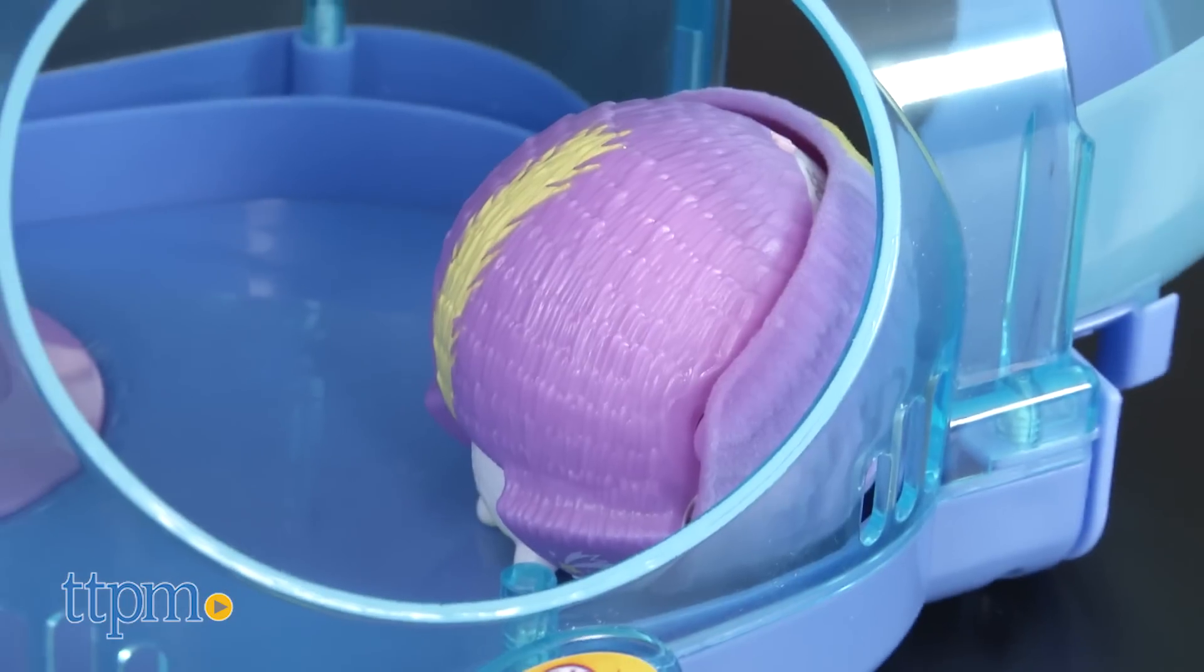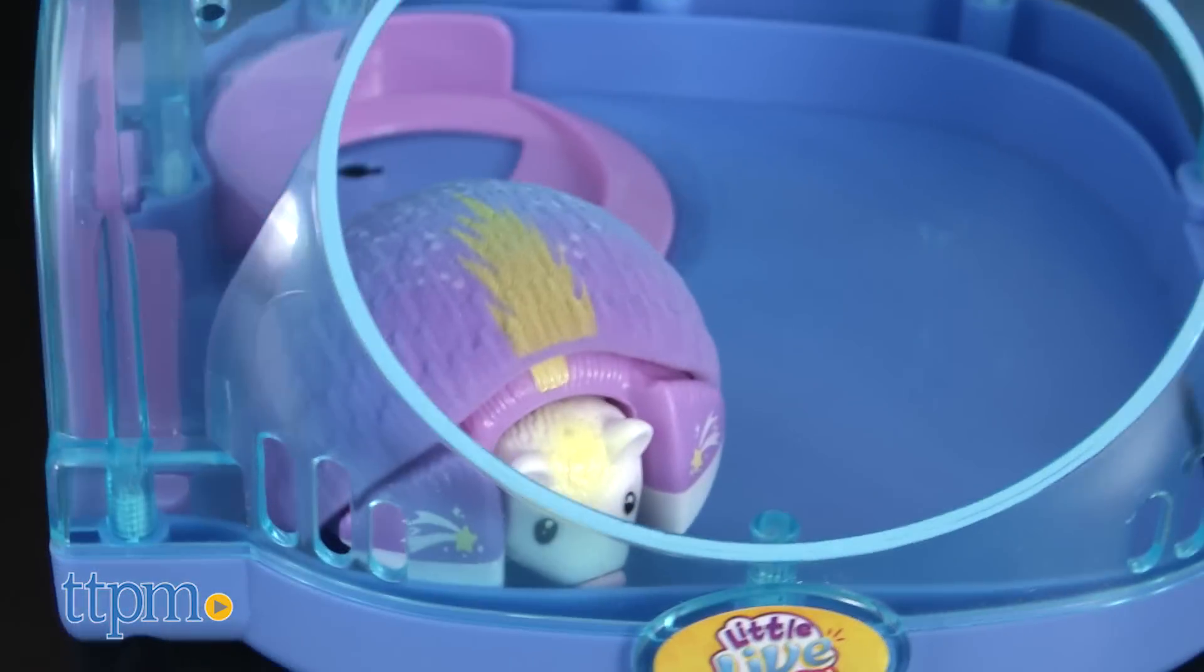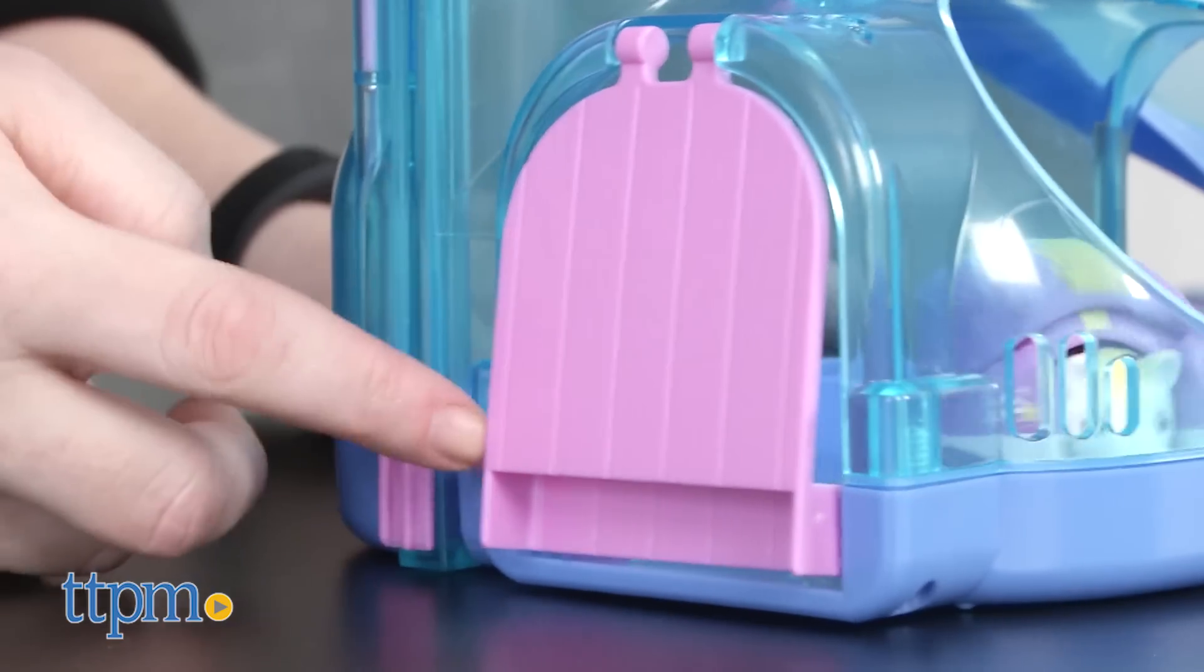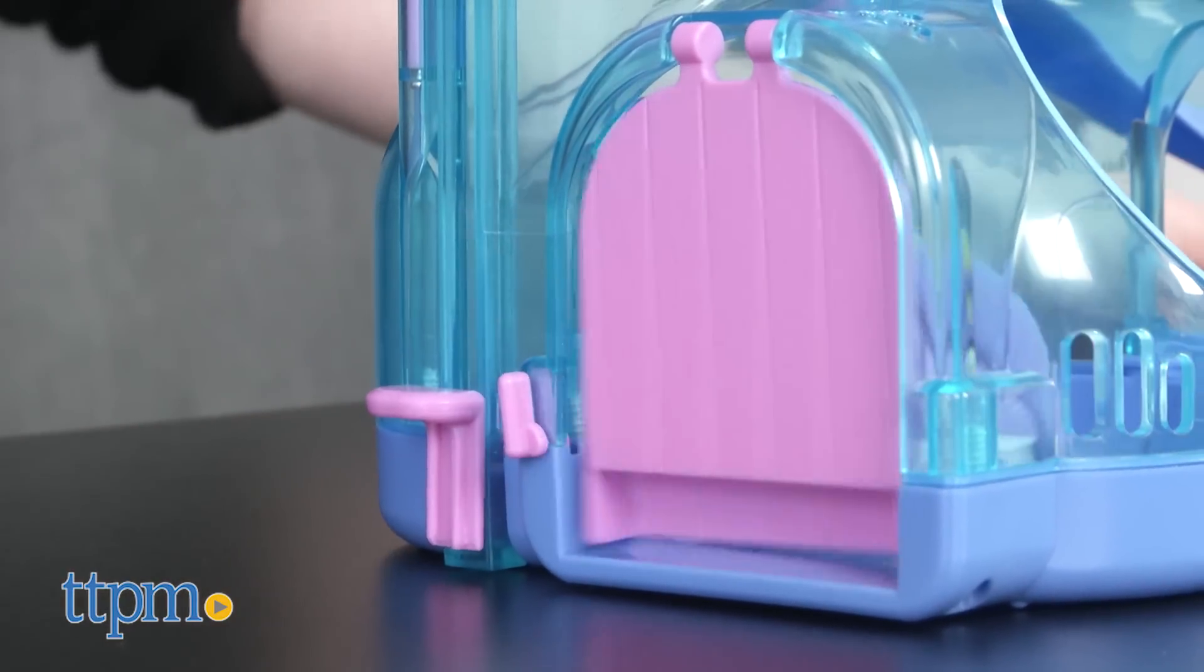You can also put the hedgehog inside the hedgehog house playset to watch it run around. There's a door on one side so that the hedgehog can enter and exit the house when it wants to, as long as you keep the door unlocked.